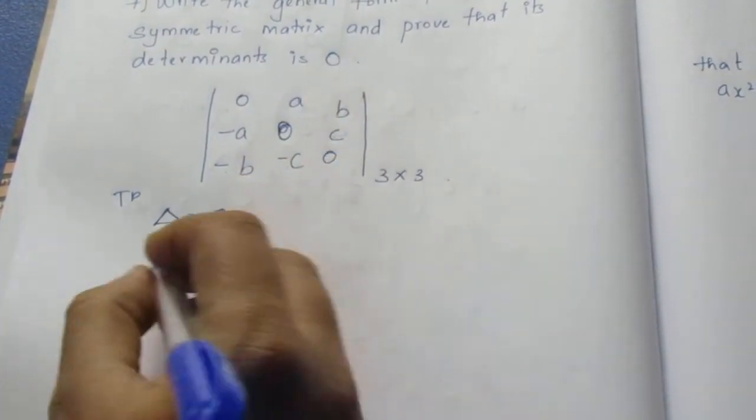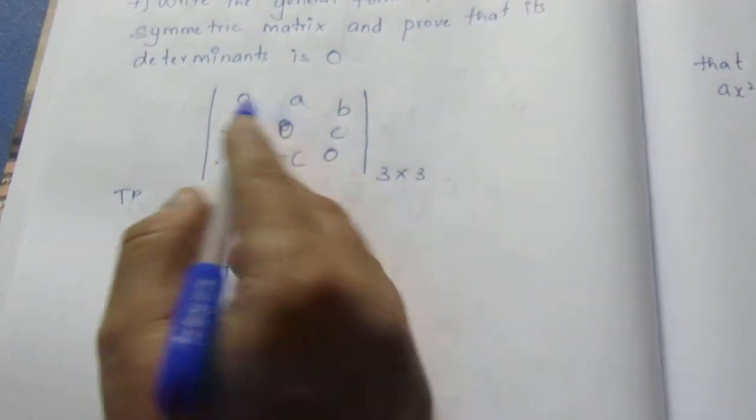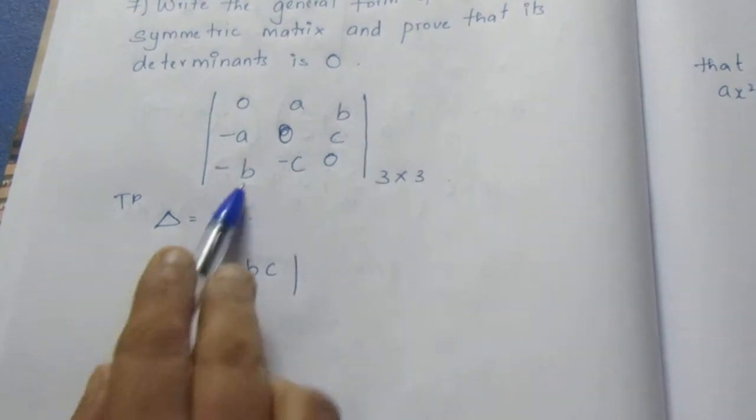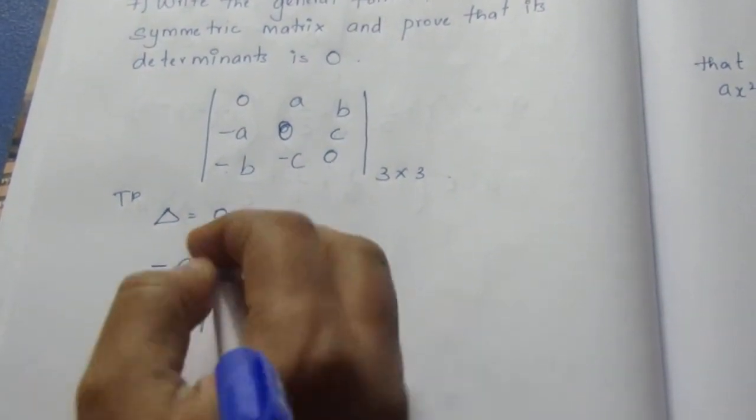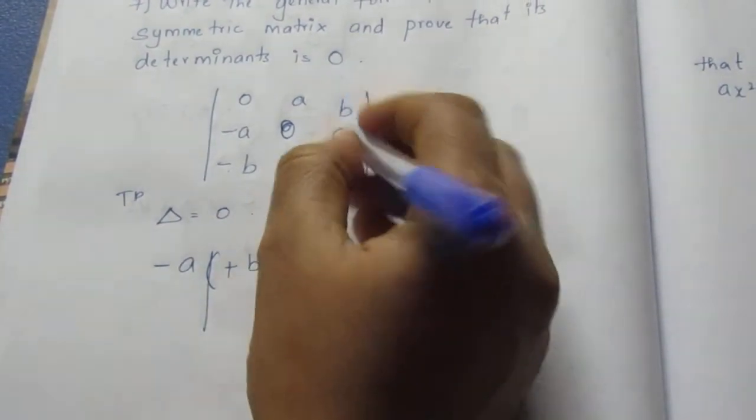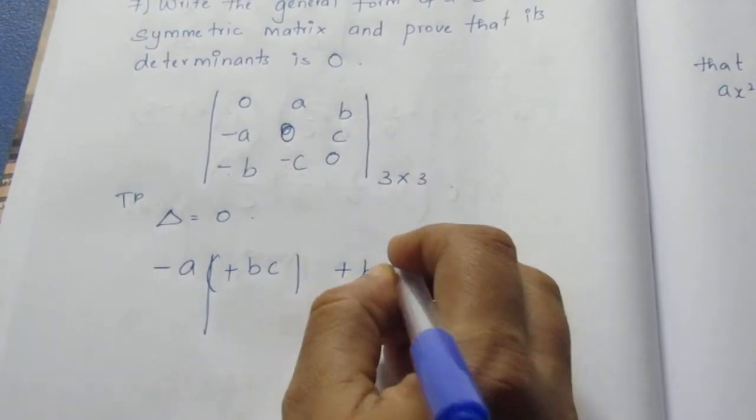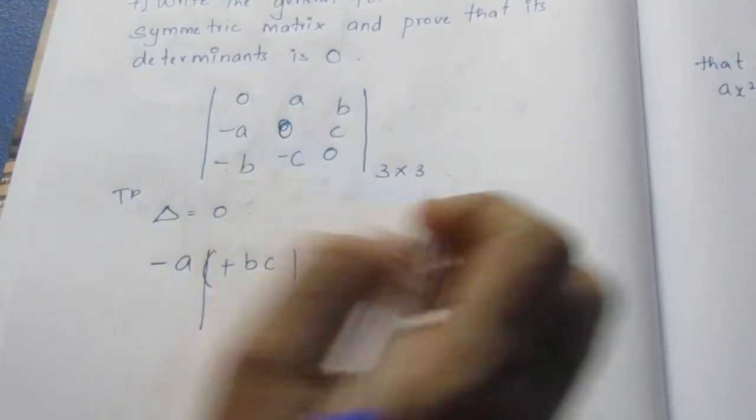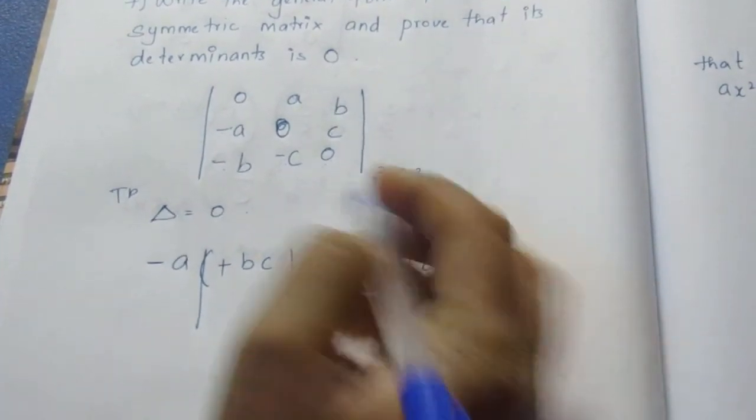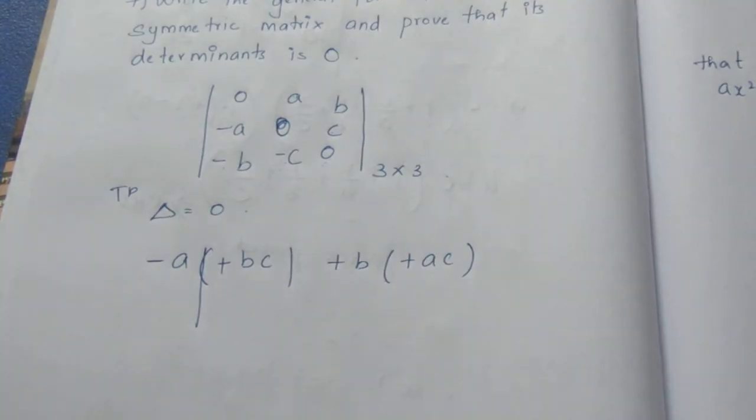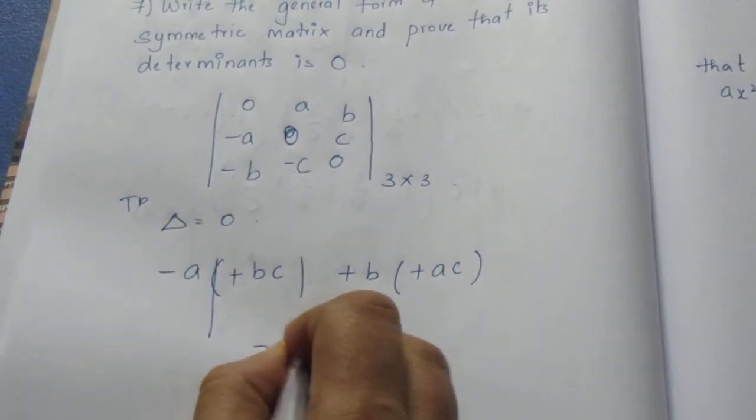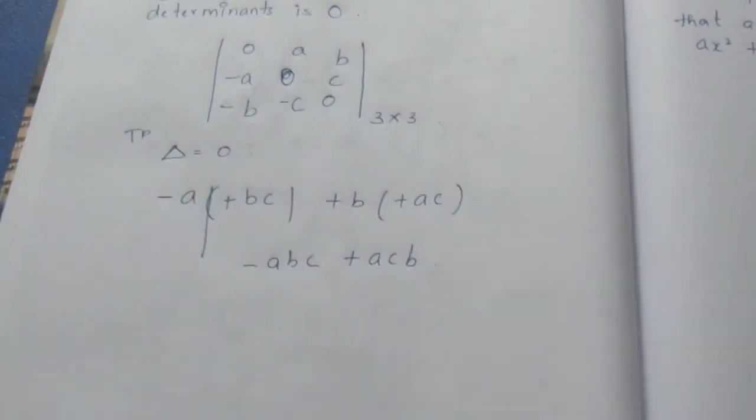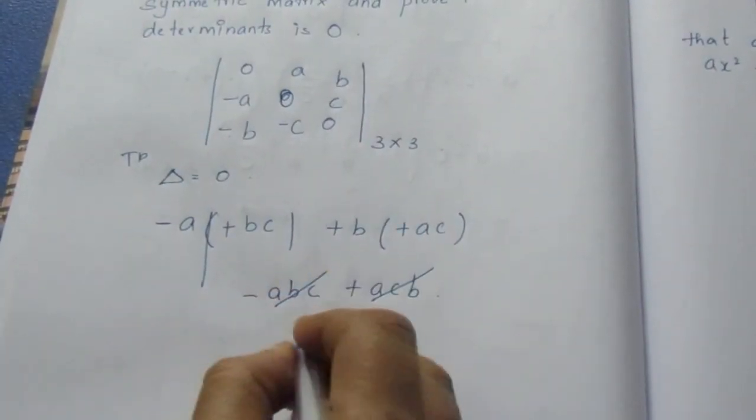This is a minus of minus plus. So this is b, plus b this row and column. This is multiply minus into minus plus side, plus ac minus 0. Now this is minus abc plus abc.